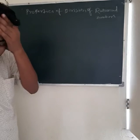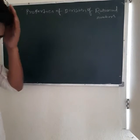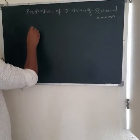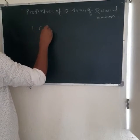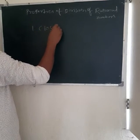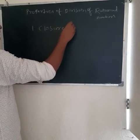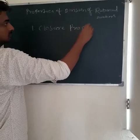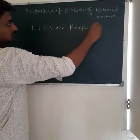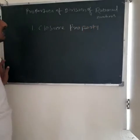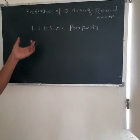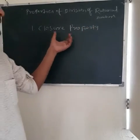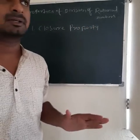Next is the property of division of rational numbers. First one is the closure property. In case of division, the closure property does not hold.